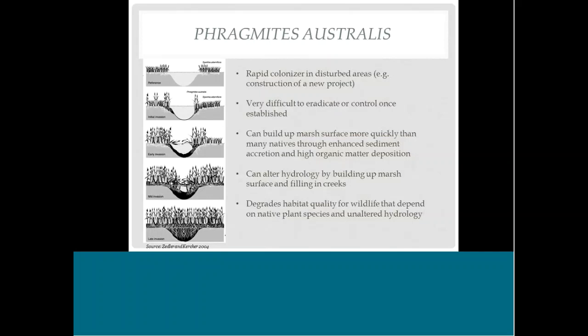Phragmites is capable of altering marsh elevation and hydrology differently than native species would. It can build the marsh surface up more quickly through enhanced sediment accretion and high organic matter deposition, and can fill in tidal creeks over time. All of those things degrade habitat quality for wildlife that depends on native species and unaltered hydrology.